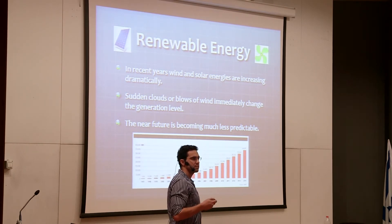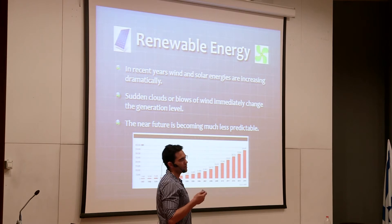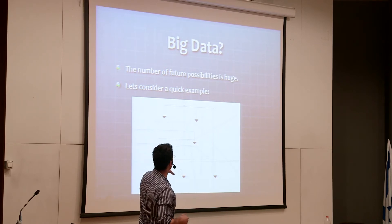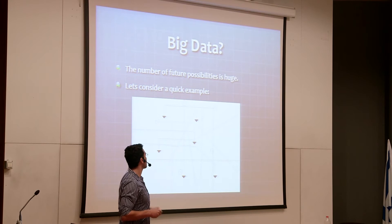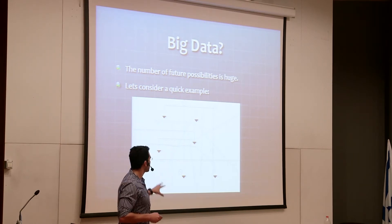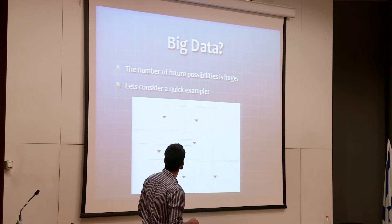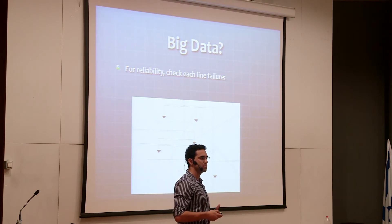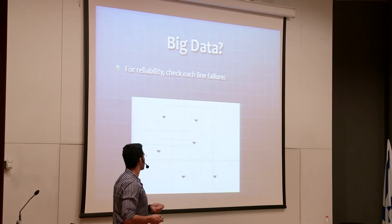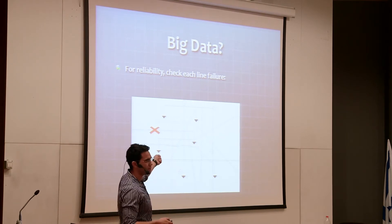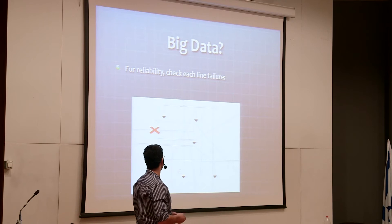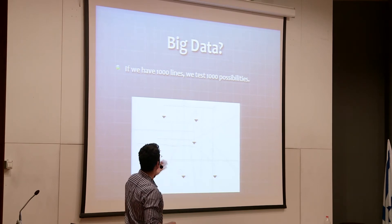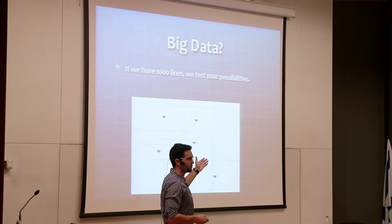How do we relate to big data? Consider this simple drawing with transmission lines, loads, and generators spread around the network. To assess reliability, TSOs take each line offline one at a time and observe how the system reacts. With 1,000 lines, they test 1,000 possibilities — and this is done in real time, every few minutes.